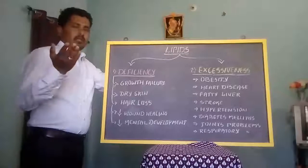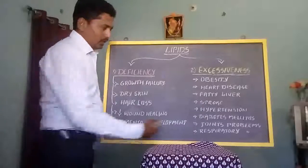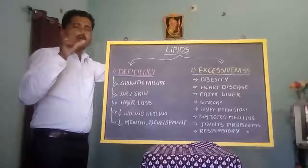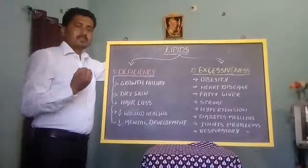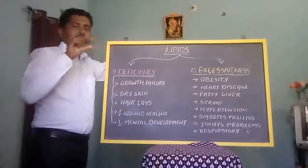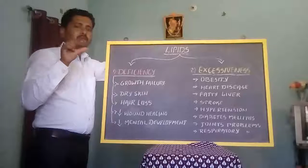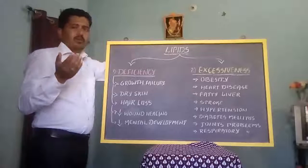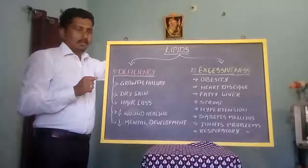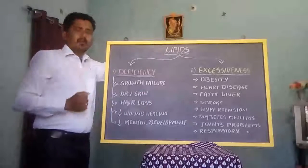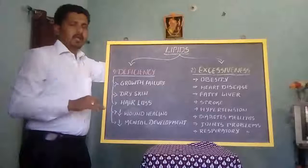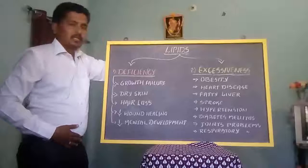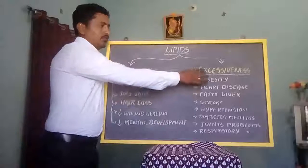Next is hypertension. As a result of atherosclerosis, narrowing of the arterial wall increases blood pressure. If the arterial wall narrows, the pressure exerted over the blood increases. Normal blood pressure is 120/80. In hypertension, blood pressure is more than 140/80 or more than 140/90. This is one of the conditions related to excessiveness of fat.